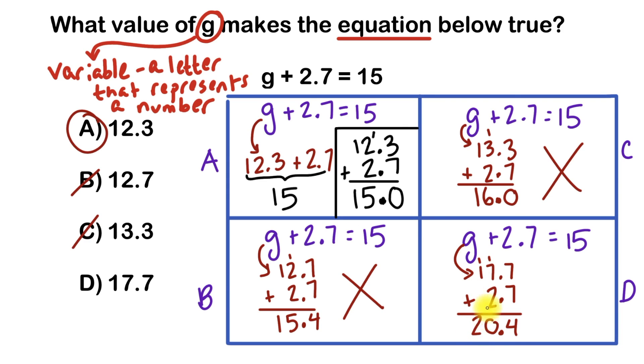Therefore my answer here, when G equals 17.7, the value of the left side would equal 20.4, which does not equal 15. And therefore choice D is also incorrect.